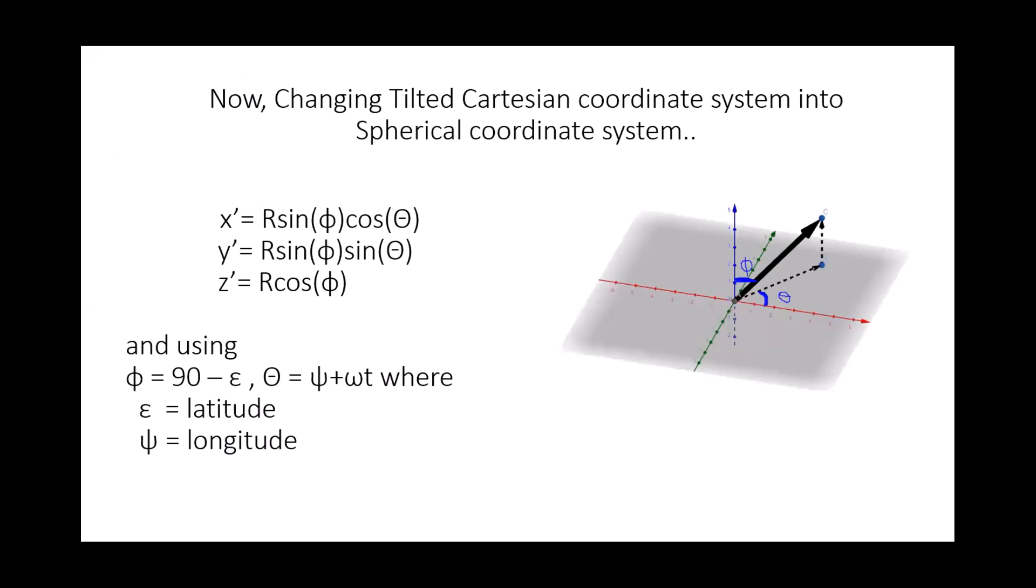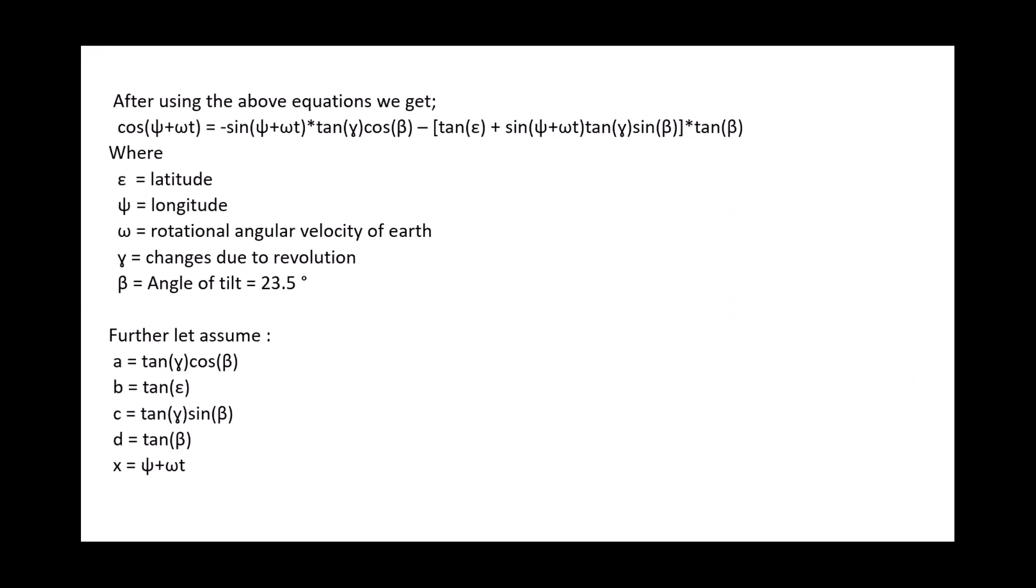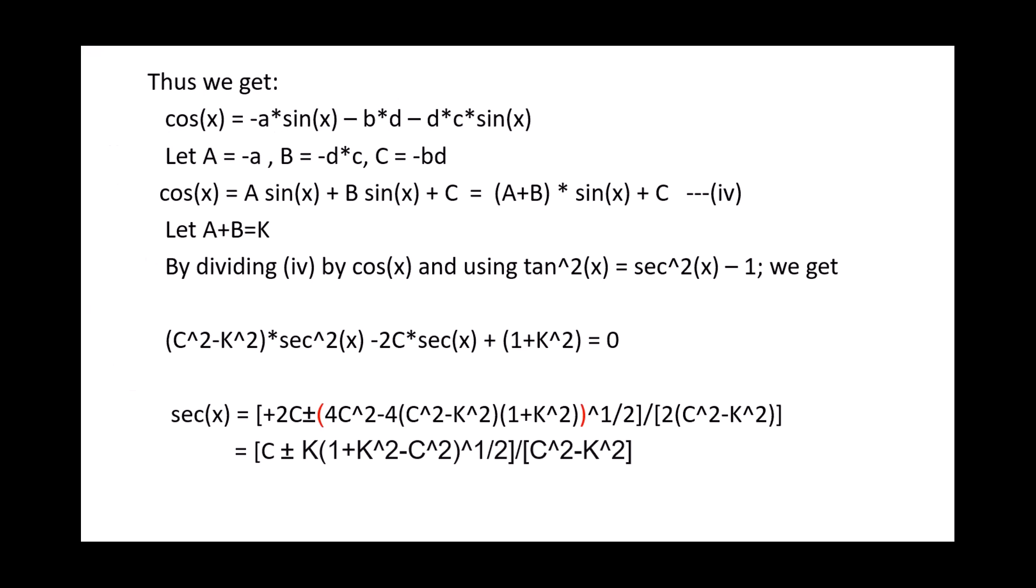Now we can use the equation of plane that we derived earlier, that is x equal to minus y tan gamma in the equation of x dash we just formed. By using the fact that y dash equal to y in this transformation, we get the equation of blue plane in tilted coordinate system that is at minus 23.5 degrees with the original one. Now we change the tilted Cartesian coordinate into spherical coordinates. We are doing this as our inputs will be in the form of latitude displayed as epsilon and longitude that is displayed as psi. By plugging in these transformations into our equations of plane in tilted coordinate system, we convert equation of plane into spherical coordinate with our z-axis pointing in the direction of spin axis of the earth.